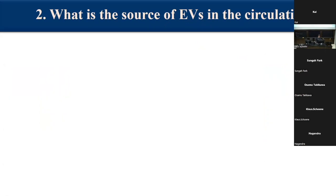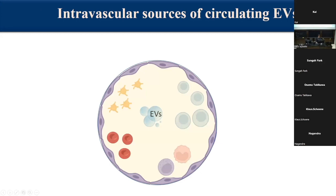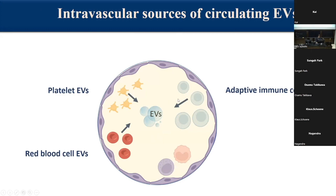The intravascular sources are, in fact, the blood cells, and to the best of our understanding, they are responsible for the vast majority of the circulating extracellular vesicles. These include platelet-derived vesicles, red blood cell-derived vesicles, adaptive immune cell-derived vesicles like T cell and B cell-derived vesicles, innate immune cell-derived vesicles such as those released by monocytes or NK cells, and we should not forget endothelial cell-derived EVs.